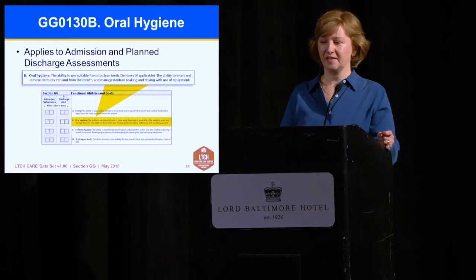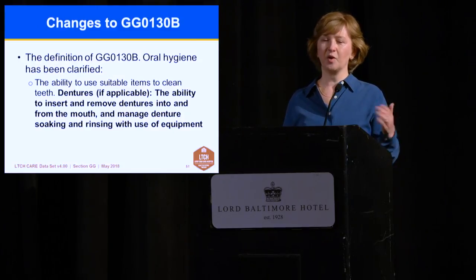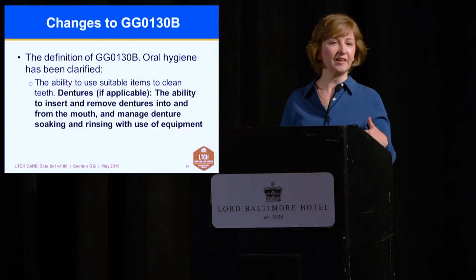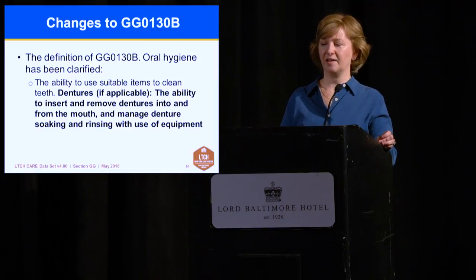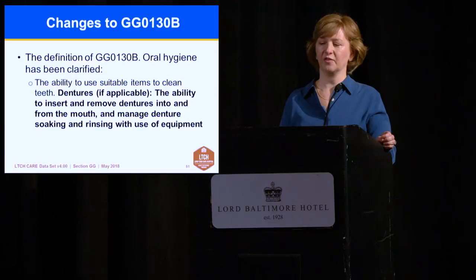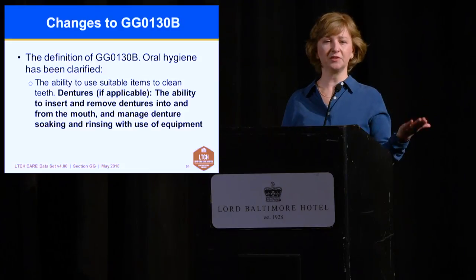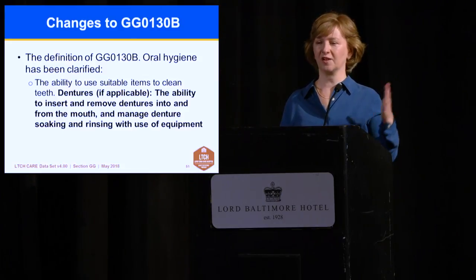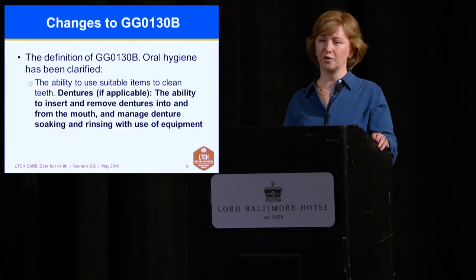The next item is oral hygiene — the ability to use suitable utensils to clean teeth. There was a clarification and rewording for alignment related to dentures. The 2018 data set specifies that, if applicable, this includes the ability to insert and remove dentures and manage denture soaking and rinsing with the use of equipment. There is no change in actual coding between the old and new definitions.